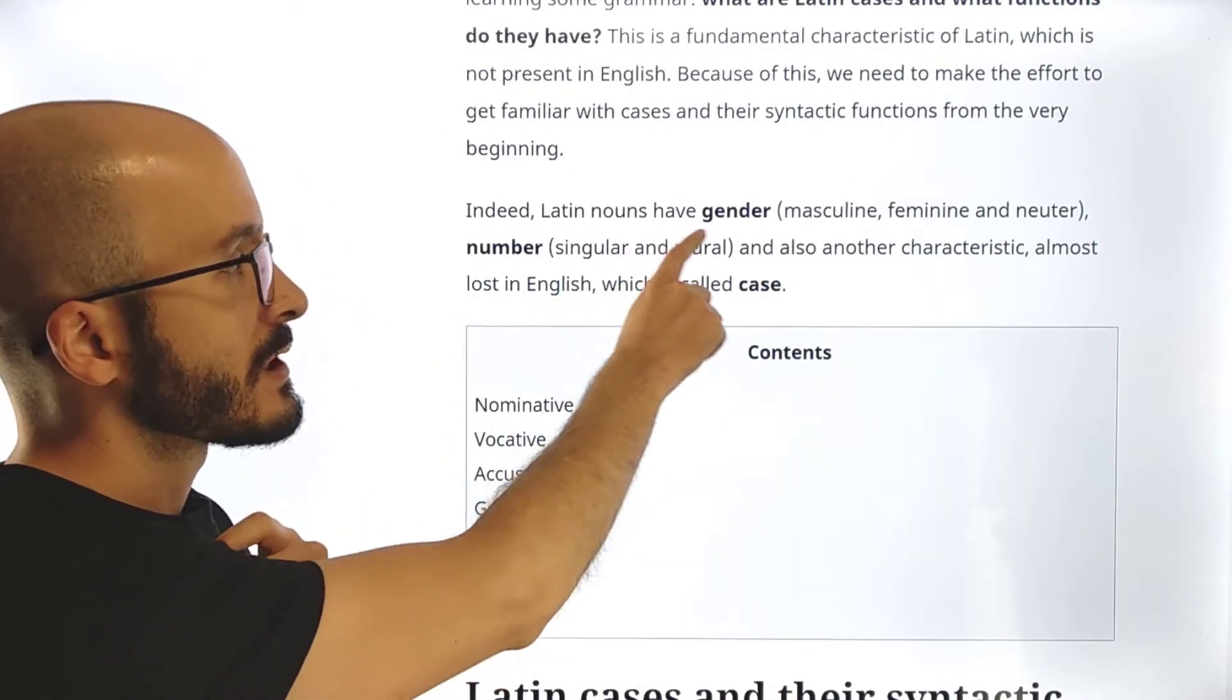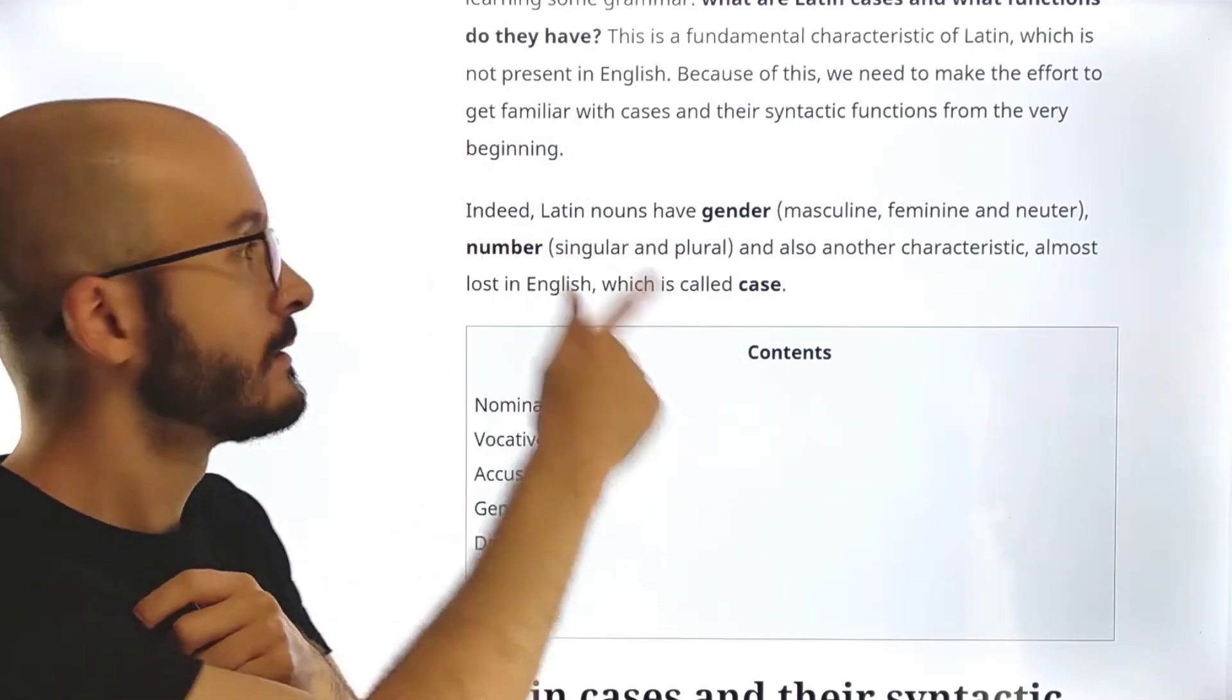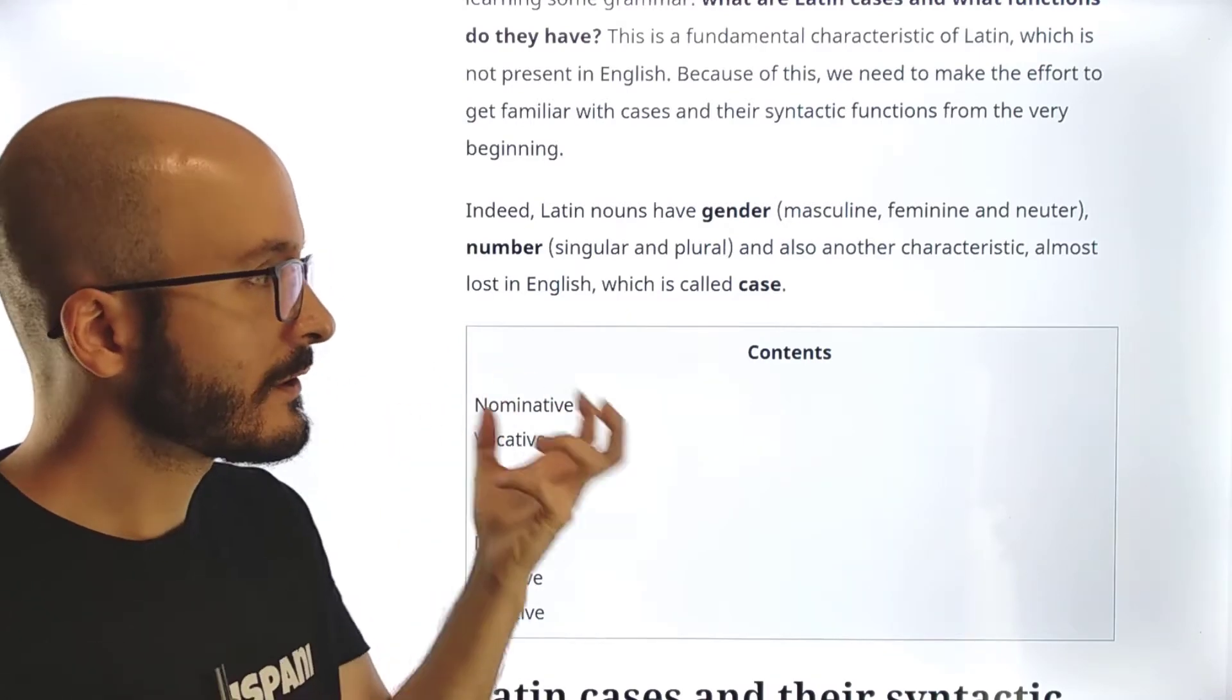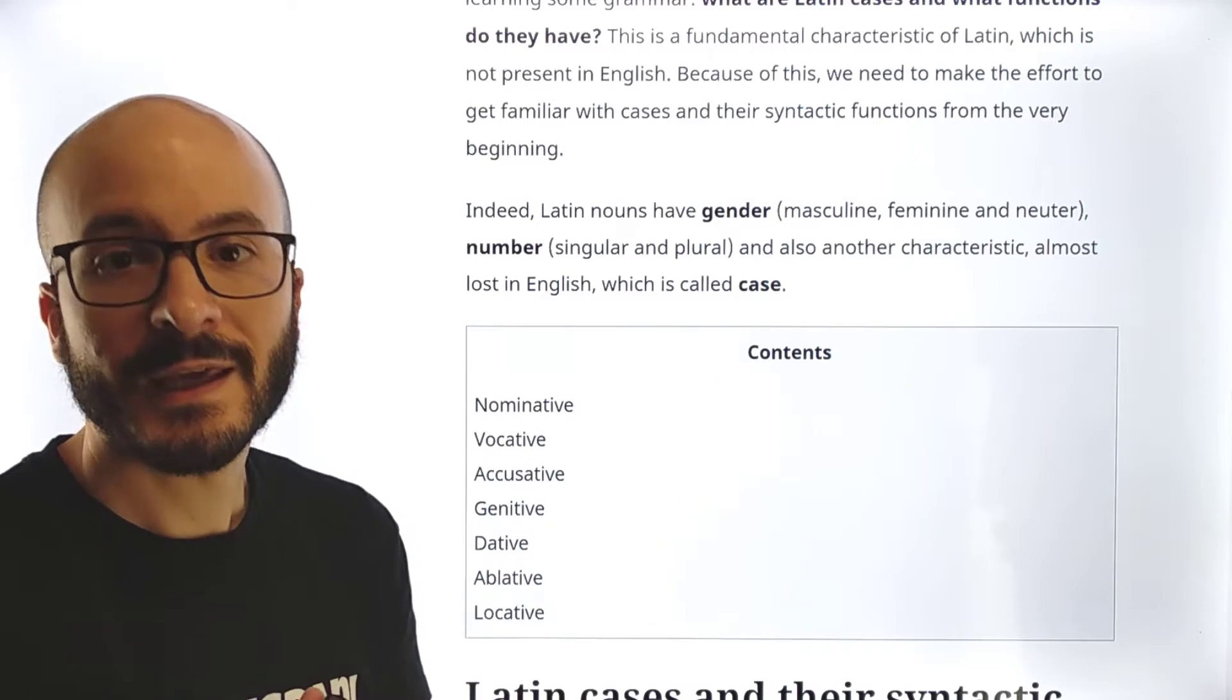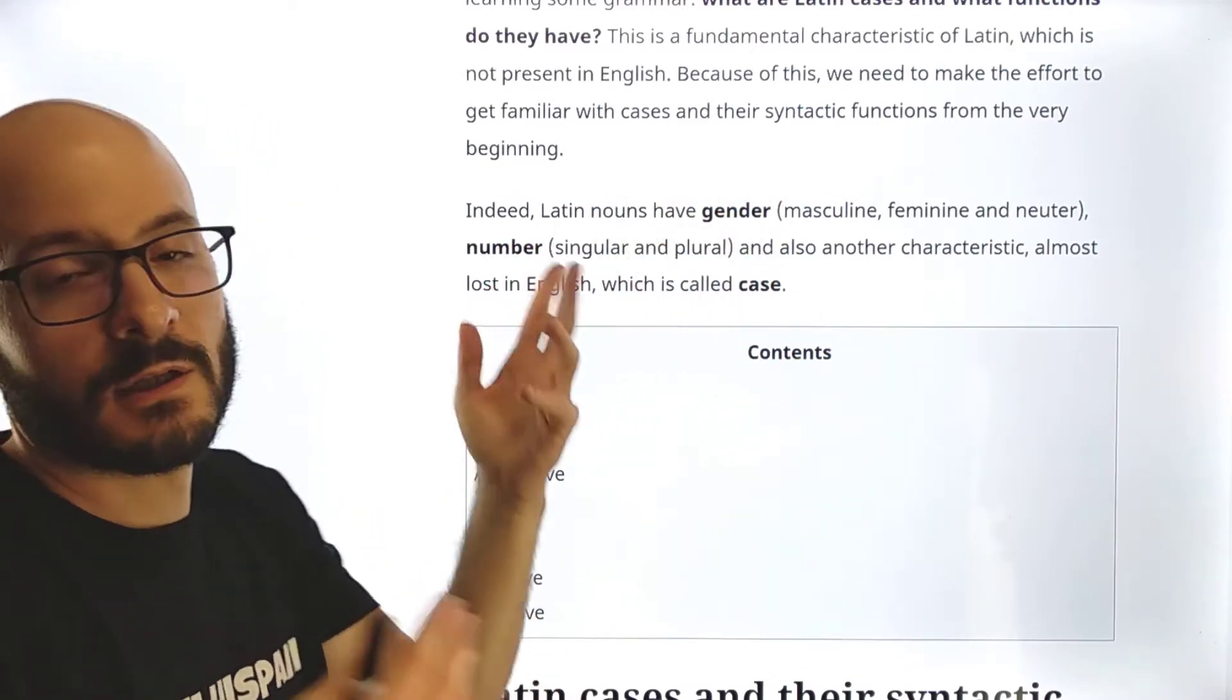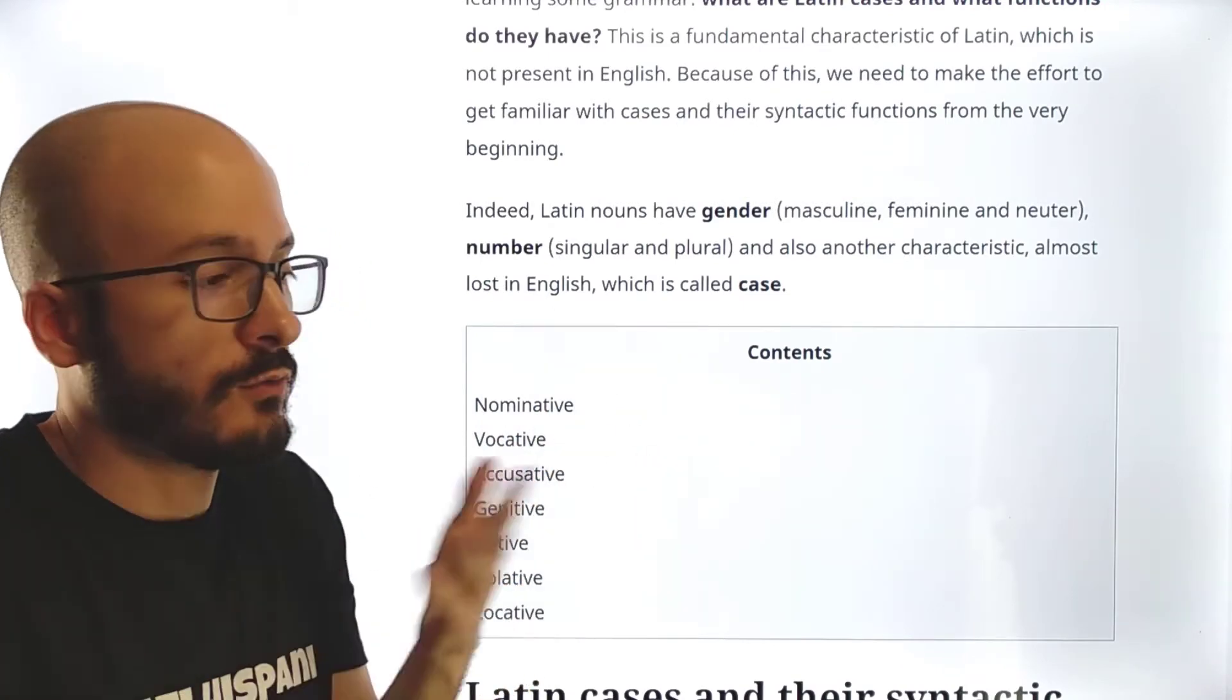So here we have quite a lot of introduction. Remember, Latin nouns have gender (masculine, feminine, and neuter) and number (singular and plural), and also another characteristic almost lost in English, which is called case. So this is the important one.